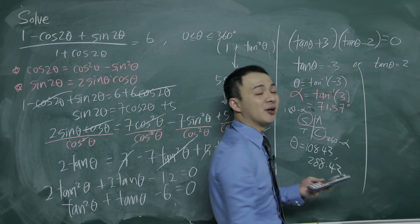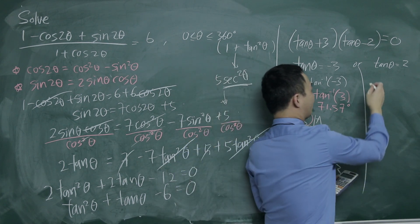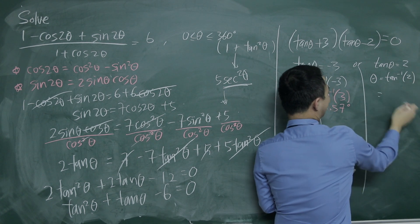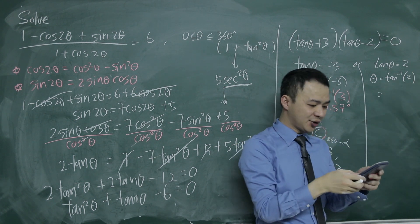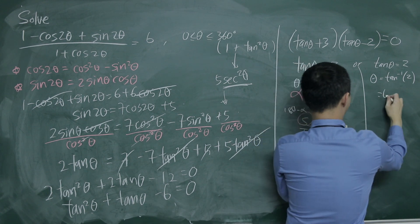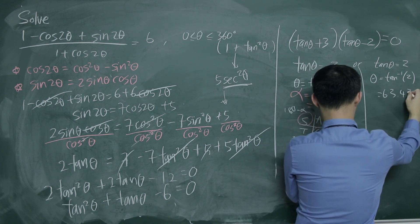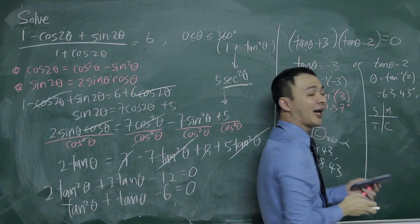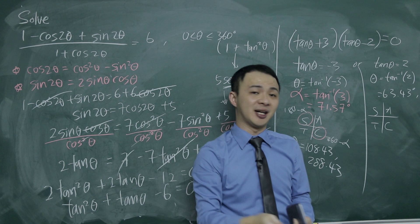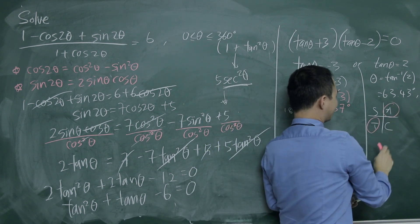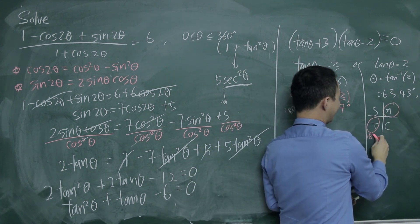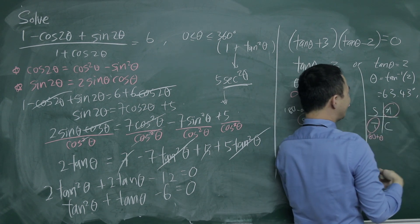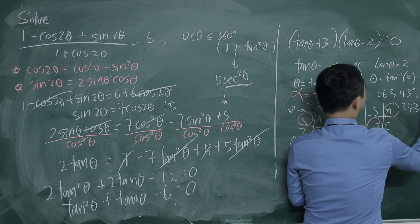For tan θ equals positive 2, it's straightforward. Inverse tan(2) gives 63.43°. Since tangent is positive in the first and third quadrants, the first quadrant answer is 63.43°, and the third quadrant answer is 63.43 plus 180 = 243.43°.